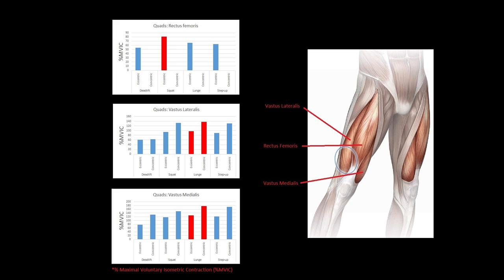So moving on to quads, I used to think that squats would be best for the quads as a whole, and they are best for the rectus femoris, which is the muscle in the middle. You can see that in the graph at the top. However, they're not actually any better than the lunges or step-ups for the vastus lateralis, which is the muscle on the outside of the quads.